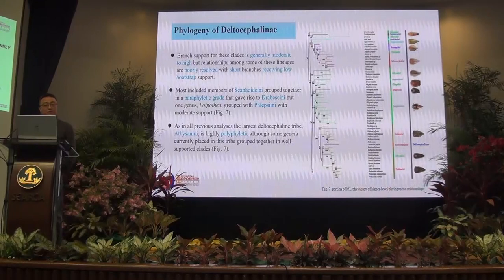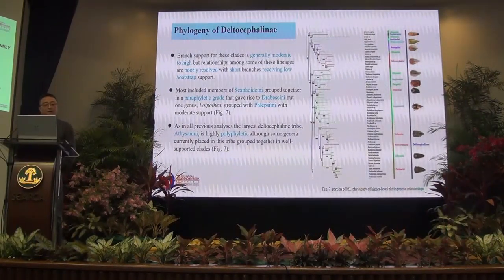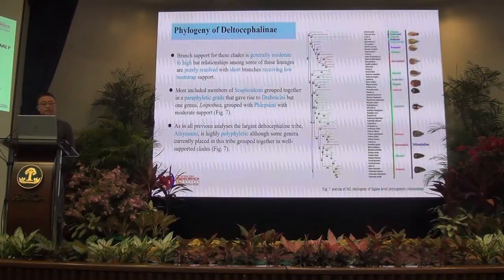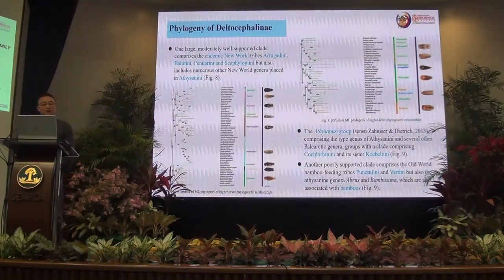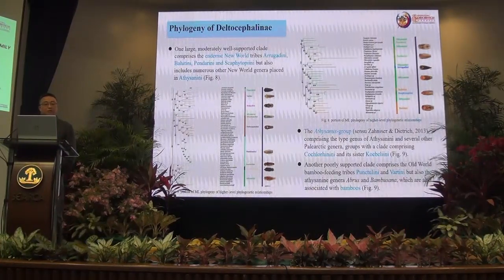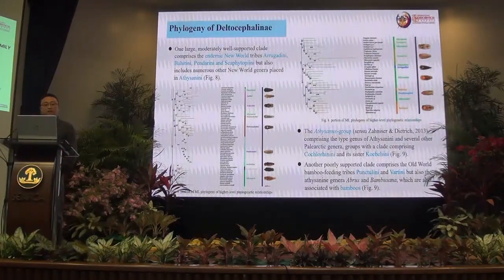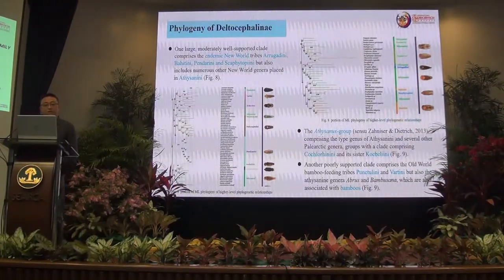As in all previous analyses, the largest Deltocephalinae tribe, Deltocephalini, is highly polyphyletic, although some genera currently placed in this tribe grouped together in well-supported clades. The large moderately well-supported clade comprises the endemic Neotropical tribe Ogrefacini, the Batini, the Pandanini, and the Scaphytopiini, but also includes numerous other New World genera placed in Deltocephalini. The Deltocephalini group comprises the type genera and several other pleiotopic genera, grouped with a clade comprising Cocker tribe and its sister, Cobellion tribe.